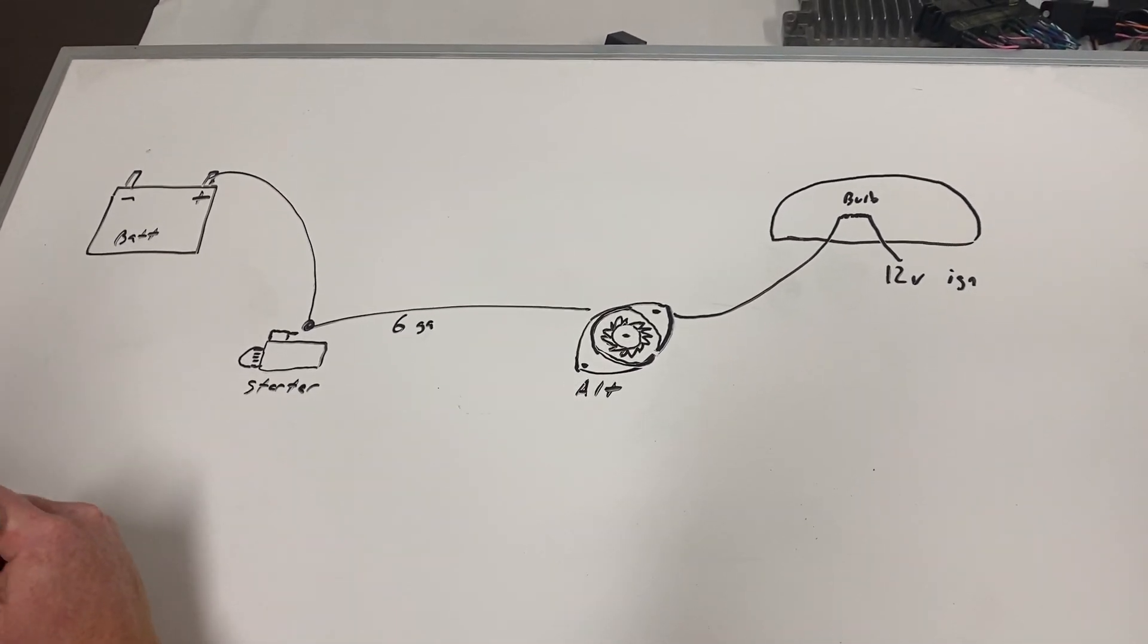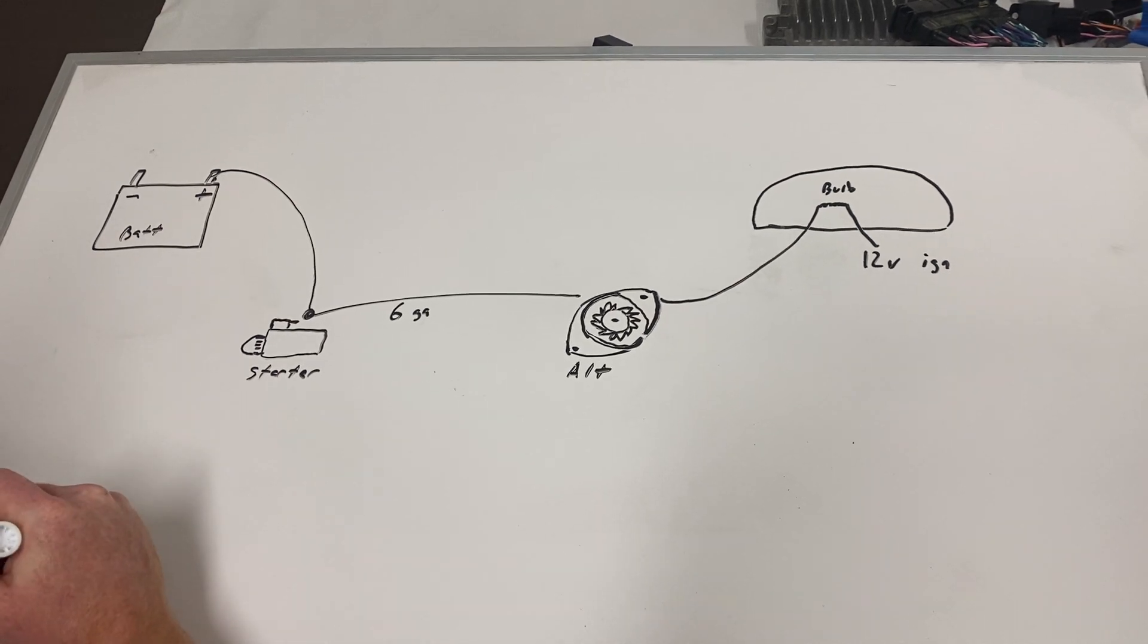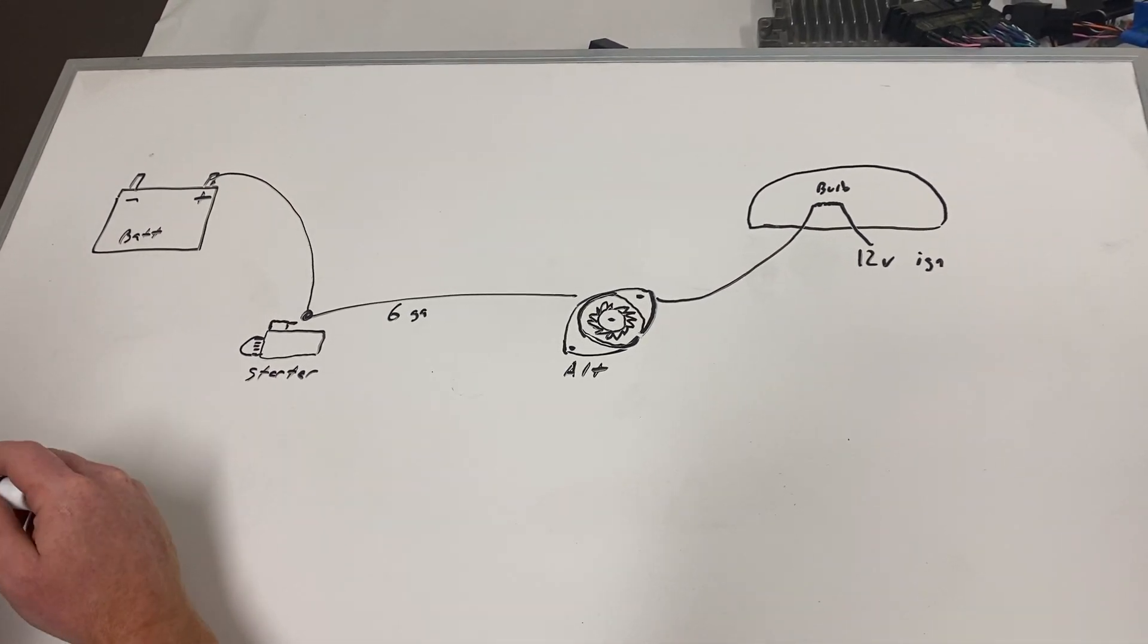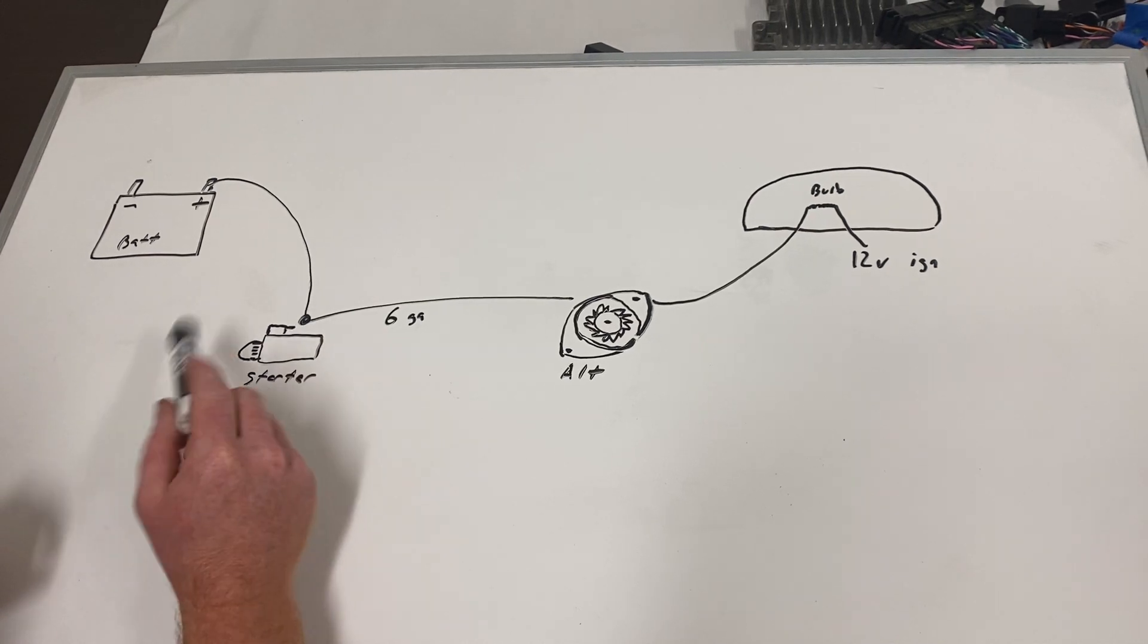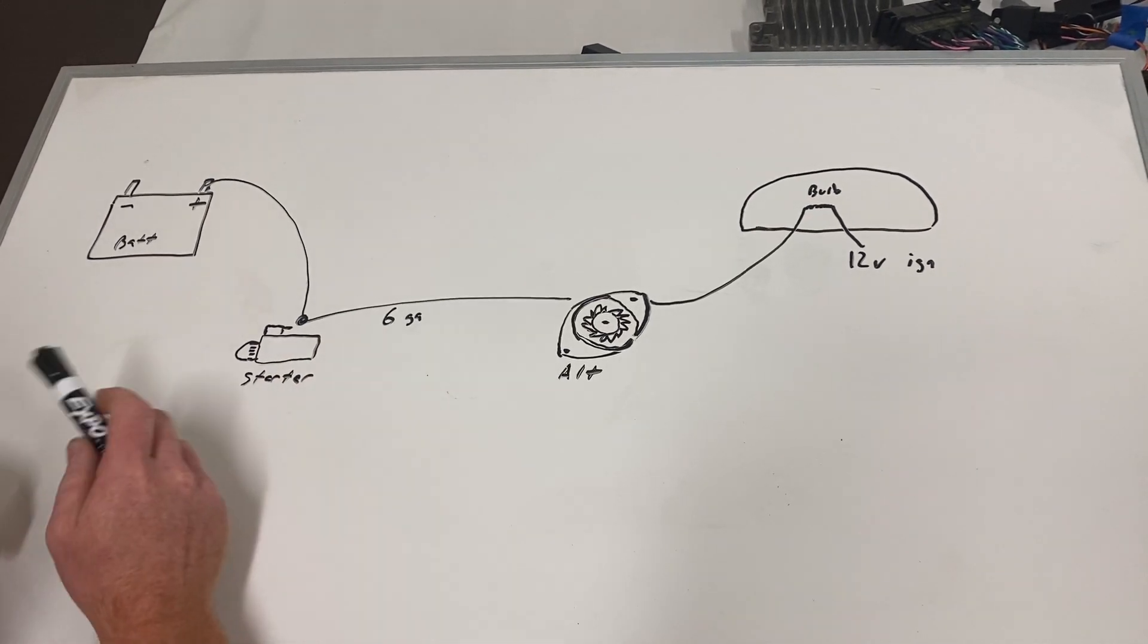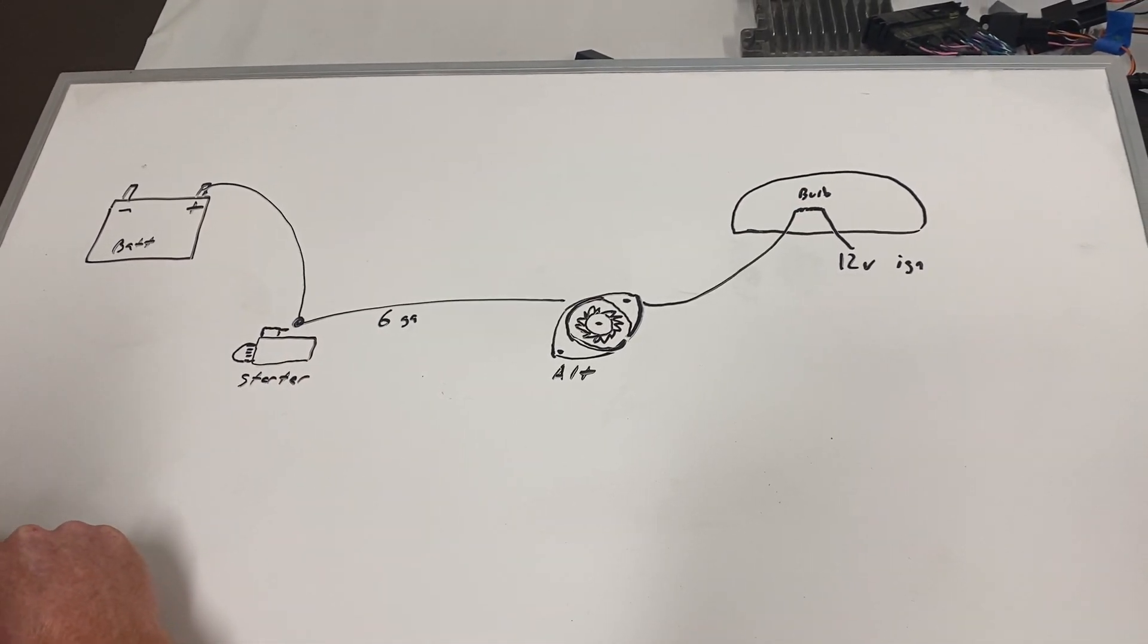So what you're going to do is hook up your cable from the charging post on the alternator and it's going to go to the same terminal on the starter that your battery is hooked up to. So that's going to be constant power all the time.